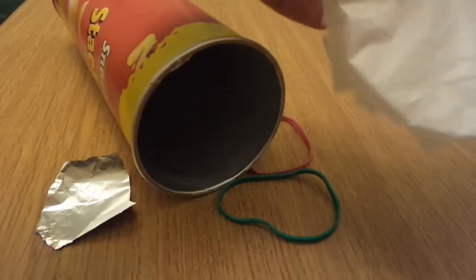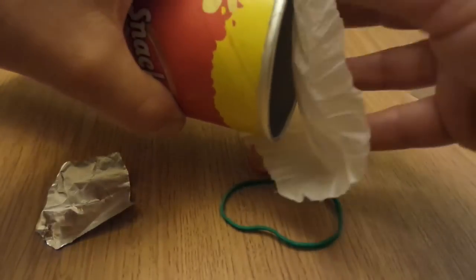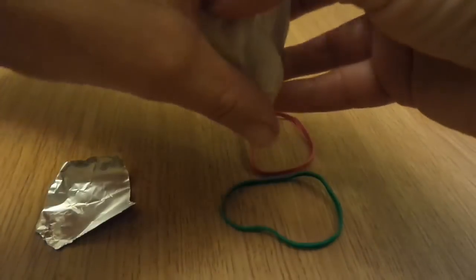So get a piece of normal white plastic bag, place it over the edge of the Pringles tin, like so.